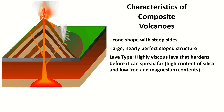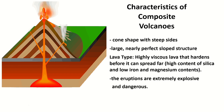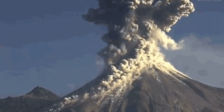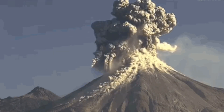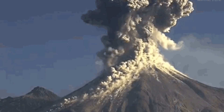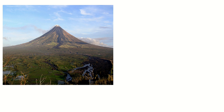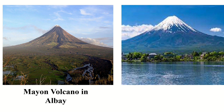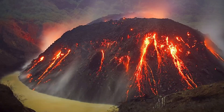The lava is highly viscous and hardens before it can spread far. The eruptions are extremely explosive and dangerous. Examples of composite volcanoes are Mayon Volcano in Albay and Mount Fuji in Japan.